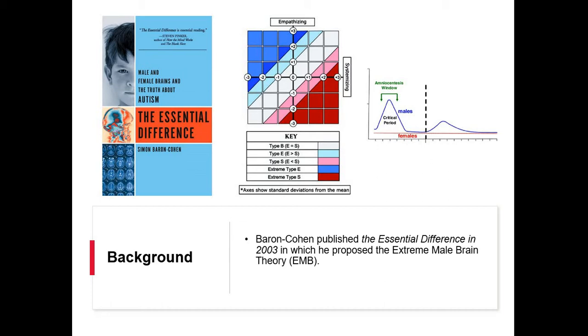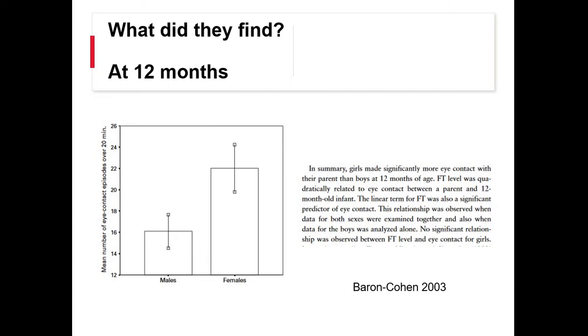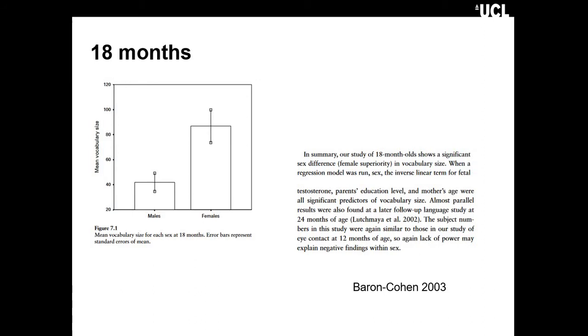Baron Cohen brings data to back up his claims. They found that at 12 months, females had higher number of eye contact per 20 minutes. Fetal testosterone had a relationship across the sexes in predicting eye contact. It seemed like fetal testosterone was mediating the sexual differentiation in terms of eye contact. At 18 months, there was a superiority in females in vocabulary, and once again mediation of fetal testosterone.